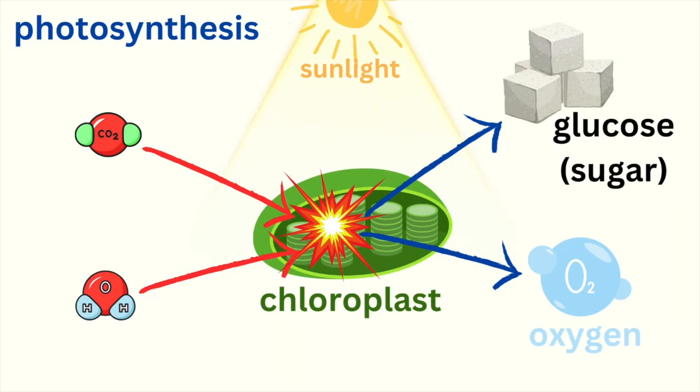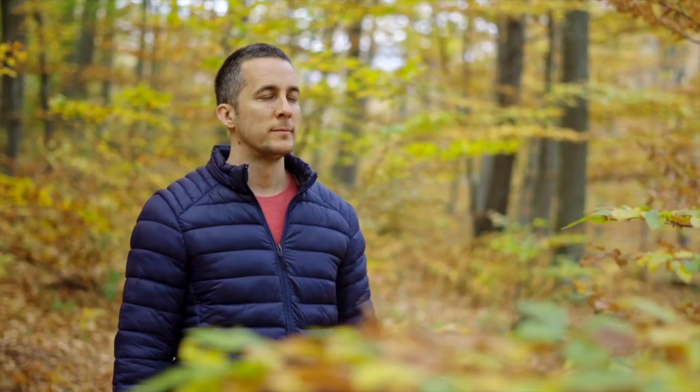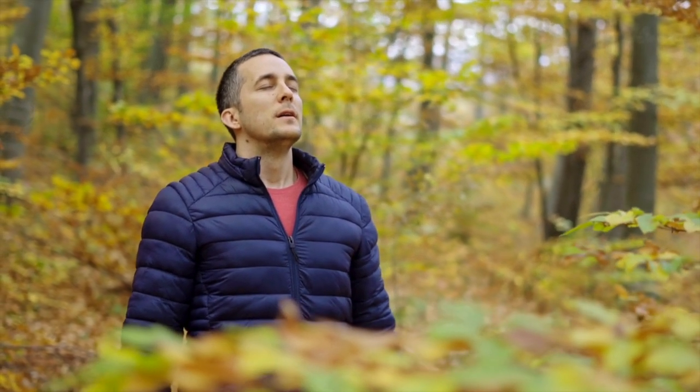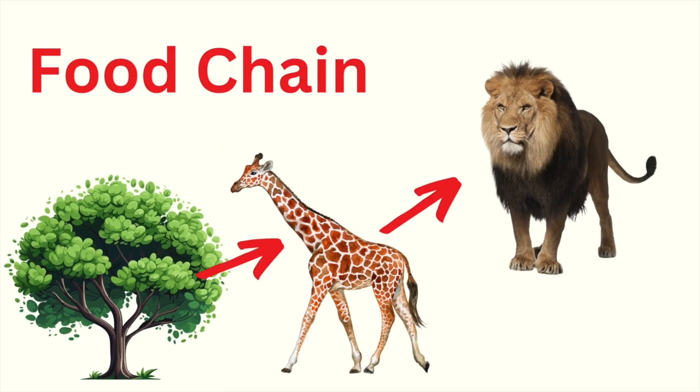Photosynthesis is not only important for plants, but for all life on Earth. Without plants, there wouldn't be oxygen for us to breathe, and plants are also the start of the food chain. They make food for animals, and then those animals become food for other animals, including us.